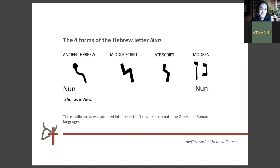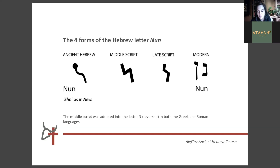The four forms of the Hebrew letter Nun. In ancient Hebrew on the left, that is the sprouting seed. Then we've got the middle script, which looks a little bit like a lightning bolt. The late script and the middle script are very similar. Then we have the modern Nun, which also has a medial and a sofit form. The middle script was adopted into the letter N, but it was reversed because they read from left to right, unlike Hebrew which reads from right to left.